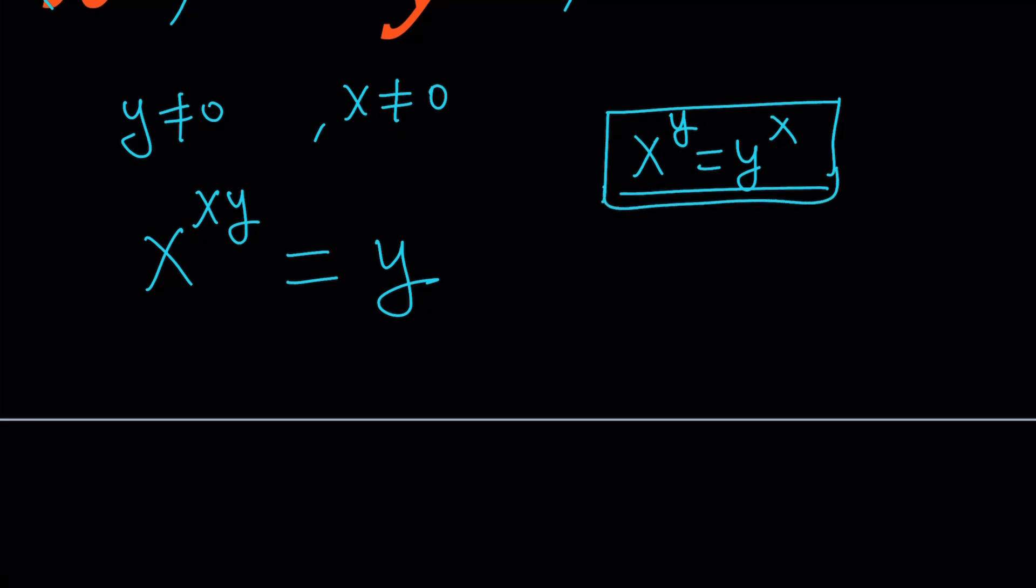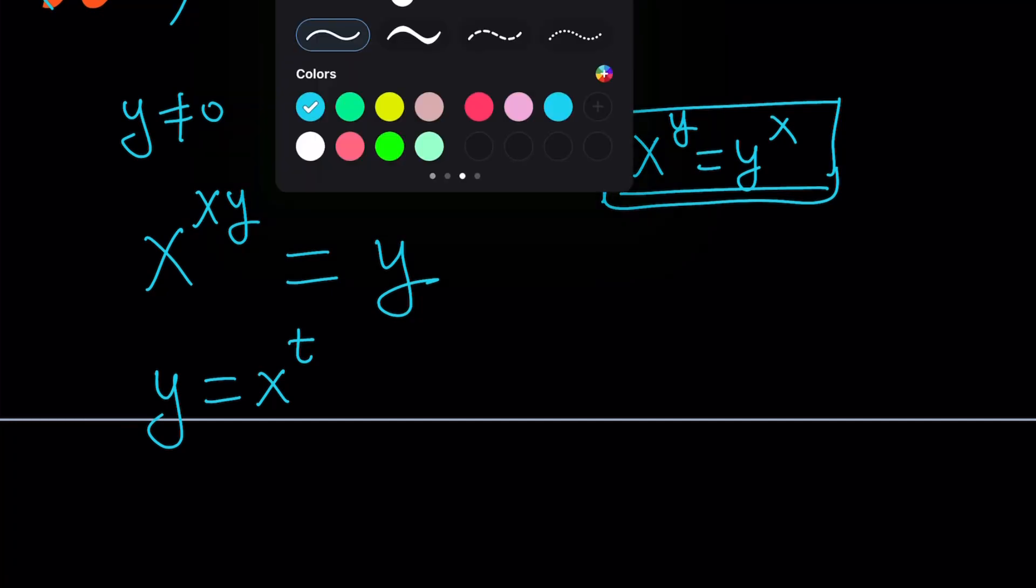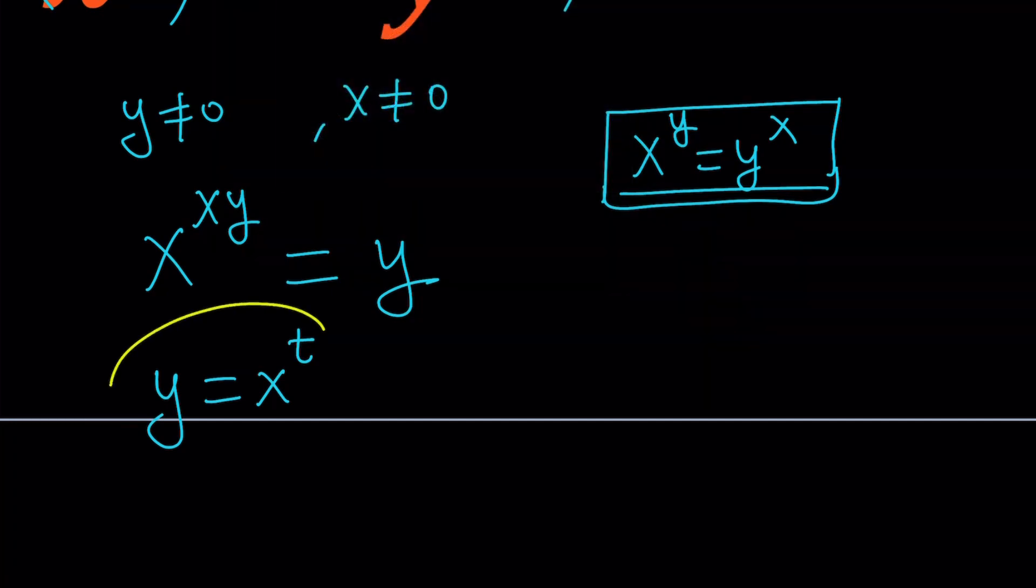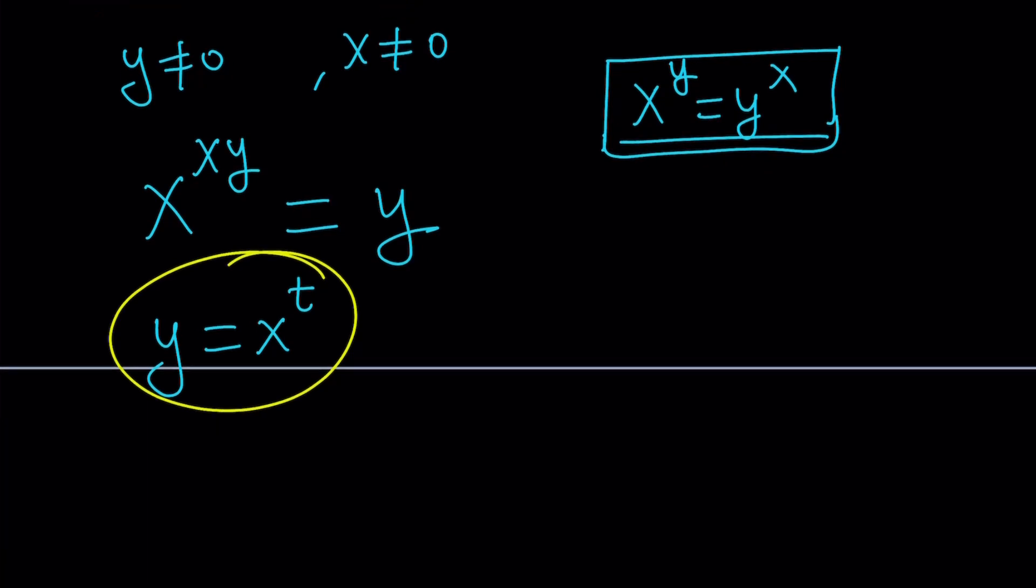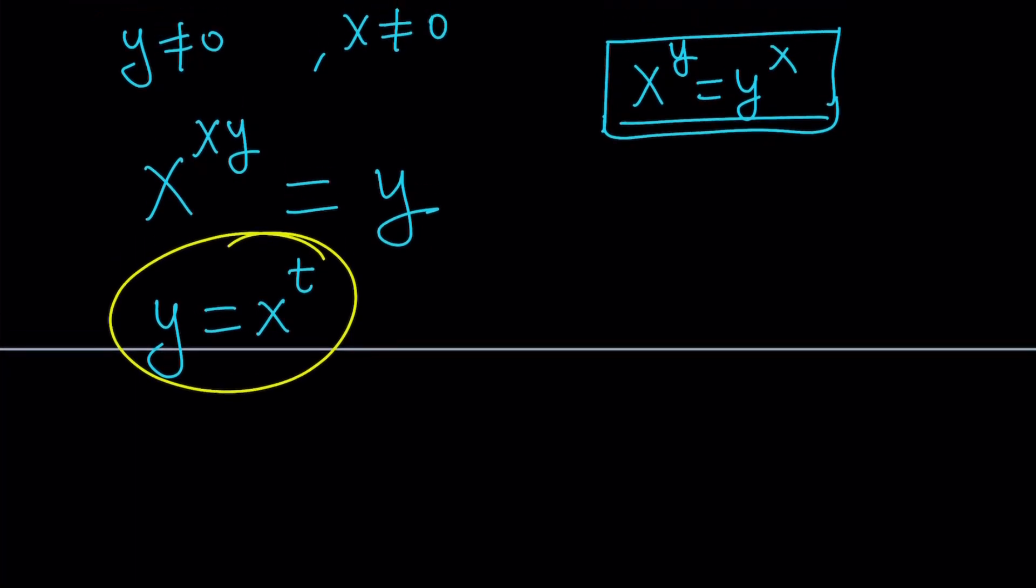Here, I'm going to assume that y can be written as a power of x, like x to the power t. You can use any variable you want, but I'd like to use t. Because t is one of my favorite variables. So if we go ahead and replace y with x to the power t everywhere, we get the following. x to the power x times x to the power t equals x to the power t.